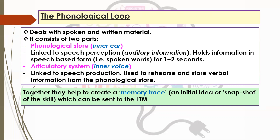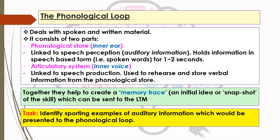The key thing is that the memory trace from anything to do with auditory information is organised in the phonological loop. What we need to think about is sporting examples of auditory information which would be presented to the phonological loop — try and think of examples from different sports. Pause the video, put yourself in a sporting situation, and think about what sort of things you're hearing that your sensors would pick up and that would end up going to the phonological loop.